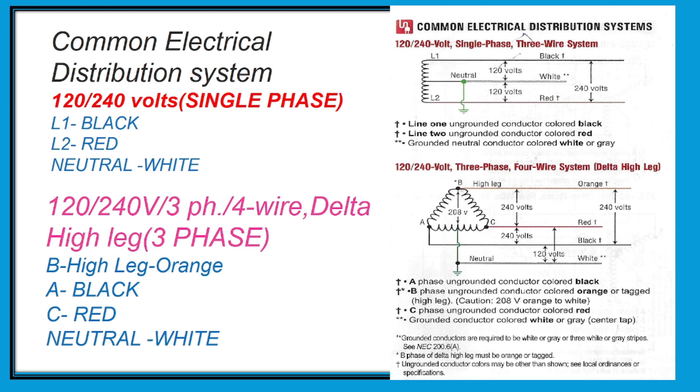Our topic for today is electrical interview. This topic is very useful for us. Common industrial distribution systems we have: 120/240 volt single phase with line one black, line two red, and neutral white. Please see the reference diagrams at the side.